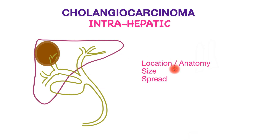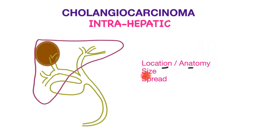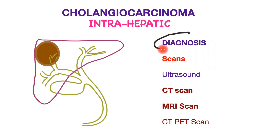In the diagnostic process through scans, the most important determinants are the location of the tumor, its anatomy — that is the association of the tumor with the main bile tubes and blood vessels within the liver — to determine the best treatment option, its size, and whether or not it has spread beyond the confines of the liver to other parts.